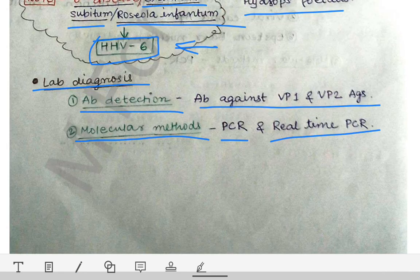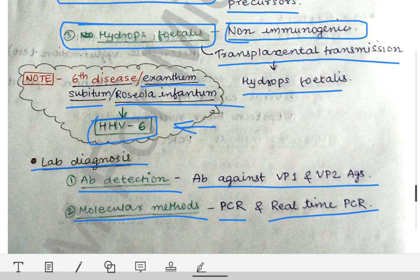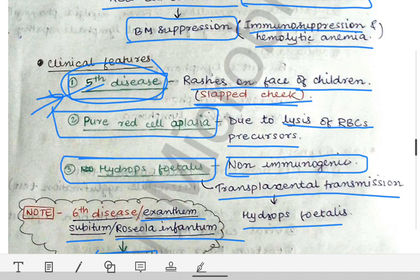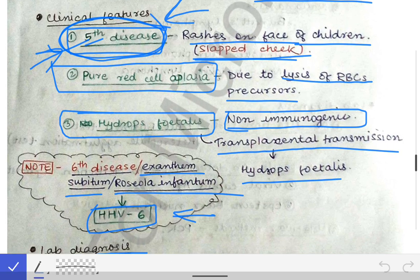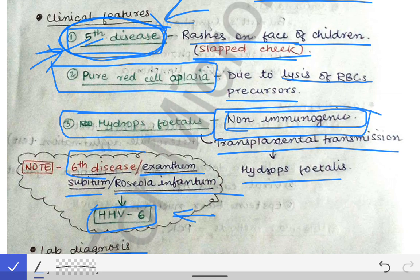The main point of this topic is to know about the fifth disease, which is very important. Image-based MCQ questions may show a picture of a child with a slapped cheek rash and ask which virus caused it — the answer is parvovirus B19. They may also ask about non-immunogenic hydrops fetalis caused by parvovirus B19 via the P antigen, or about the sixth disease caused by human herpes virus 6.